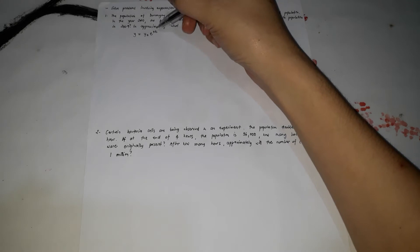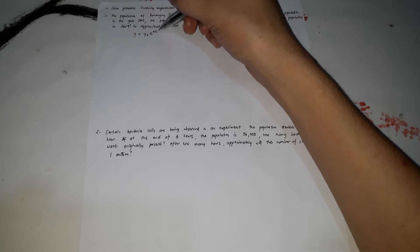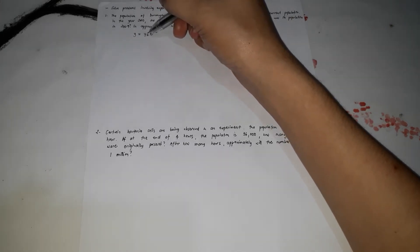First, we're going to list the given. In the year 2000, the population is 1,000. The equation we're going to use for exponential growth is y = y₀ · e^(kt), where k is the rate constant, t is time, y₀ is the initial population, and y is the population after t time.